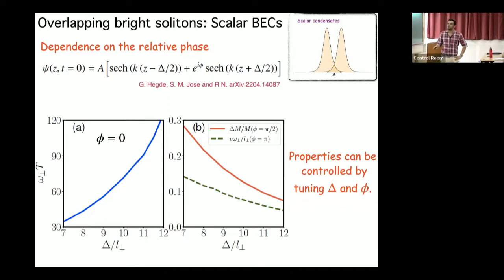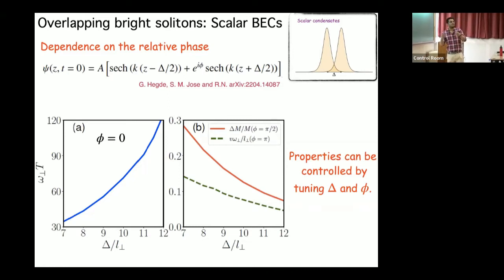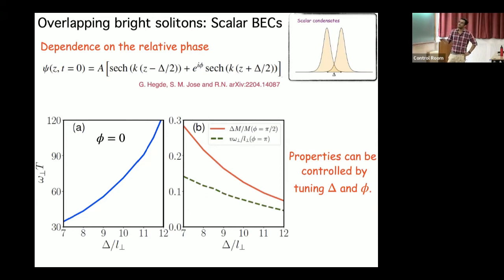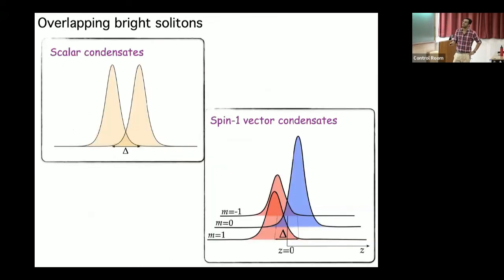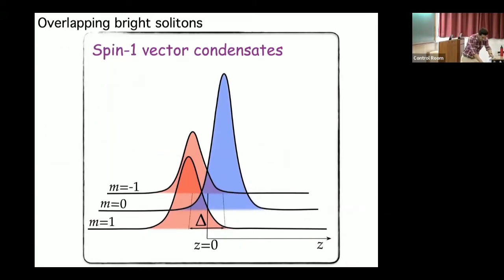The properties of the solitons can be controlled by varying the extent of overlap. For example, the frequency of the bound state oscillation for phi = 0, the mass transfer between solitons, and in the phi = pi case, the velocity of the symmetrically propagating solitons — all can be controlled by the separation parameter delta.